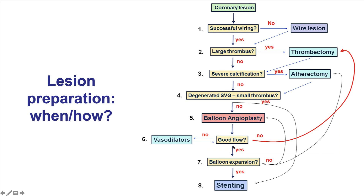If all those steps are achieved, we can proceed with stent implantation, discussed in Chapter 10. Having a systematic approach to every coronary lesion requiring PCI is very useful. In general, large thrombus is treated with thrombectomy, and severe calcium with atherectomy. Primary stenting is done infrequently, mainly in cases of degenerated vein graft and small thrombus. Balloon angioplasty should be done in the vast majority of cases, followed by assessment of good flow and good balloon expansion, after which a stent is implanted. Thank you.